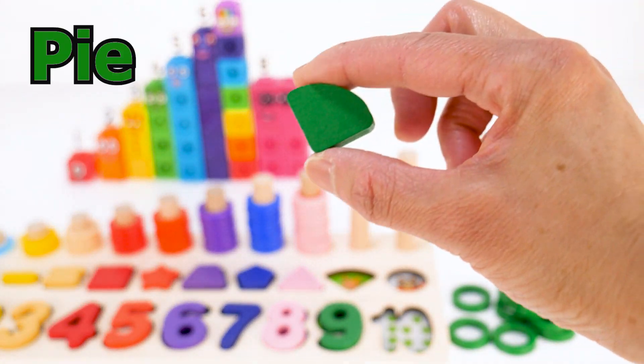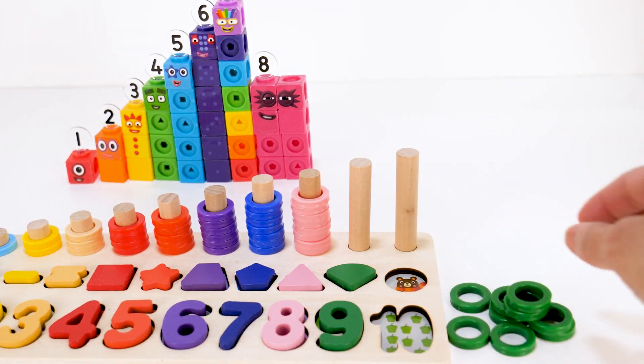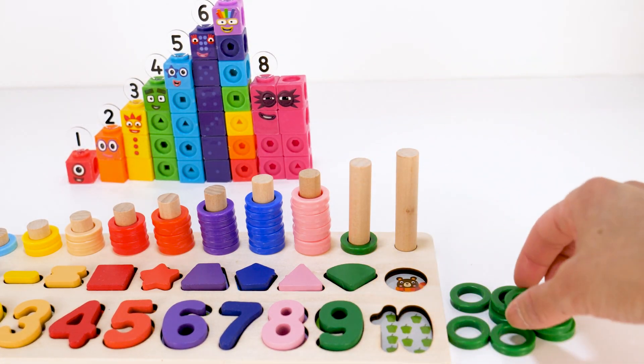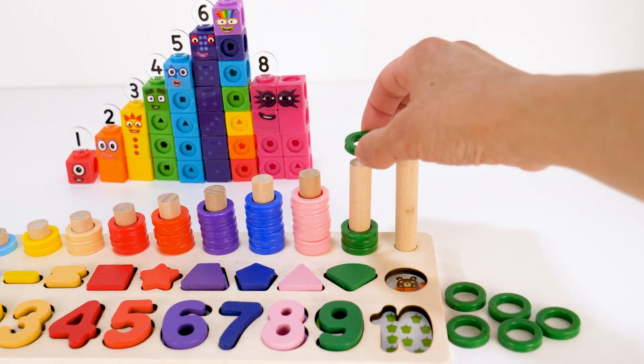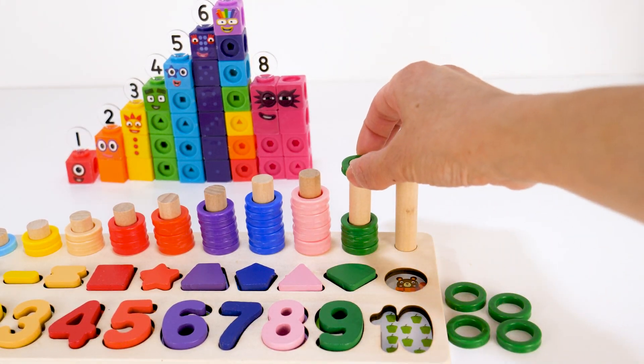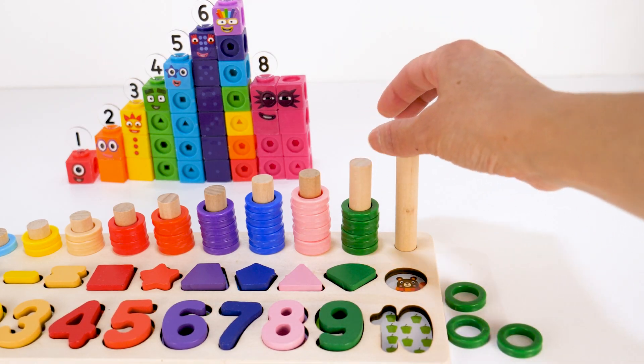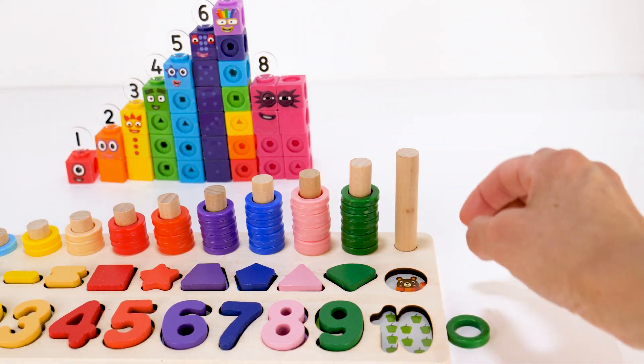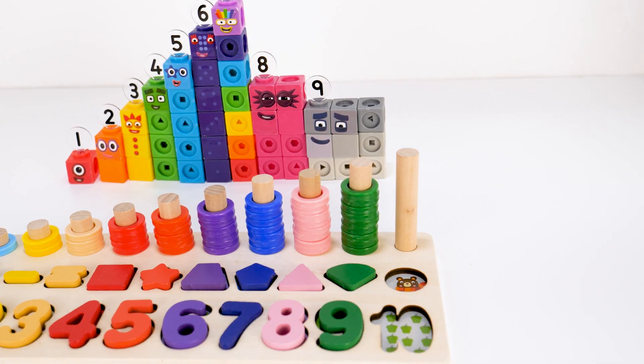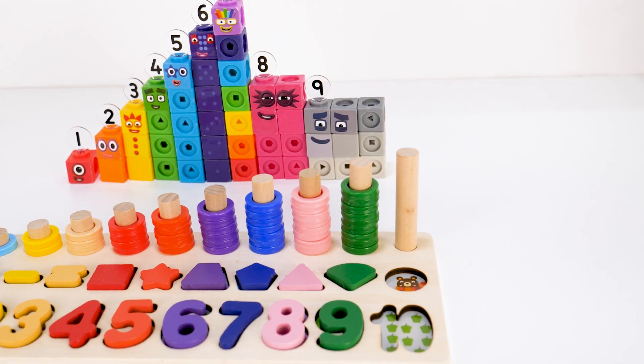Pie shape. One, two, three, four, five, six, seven, eight, nine. Nice! We got number block nine.